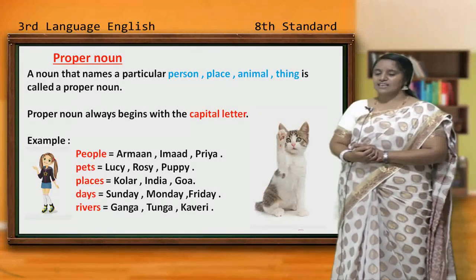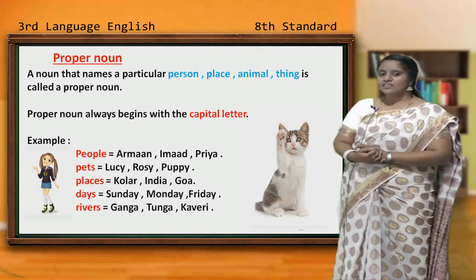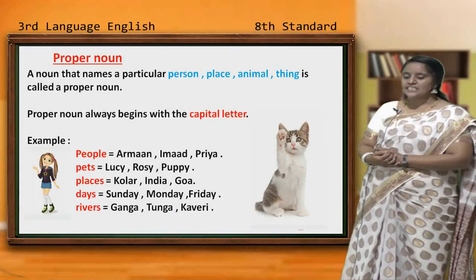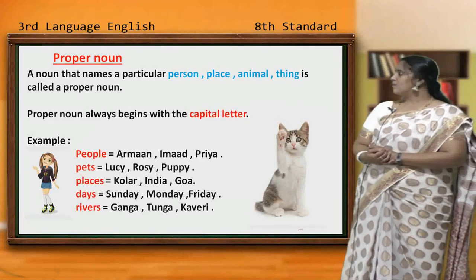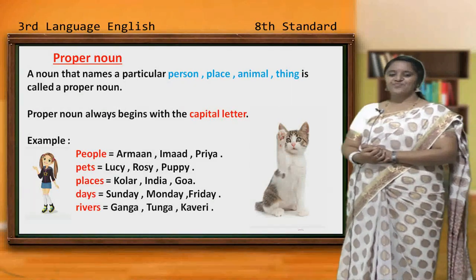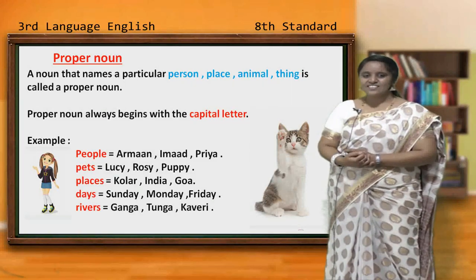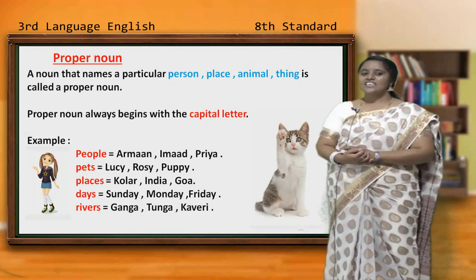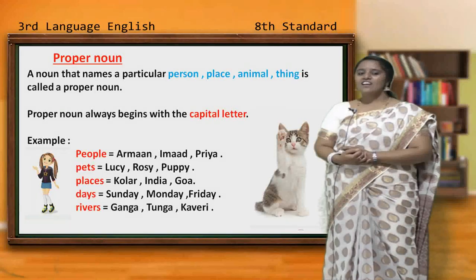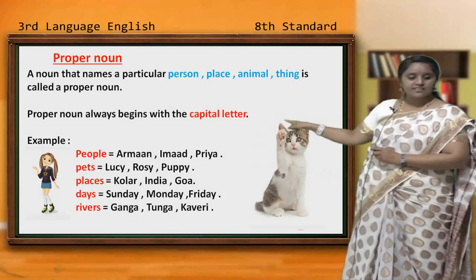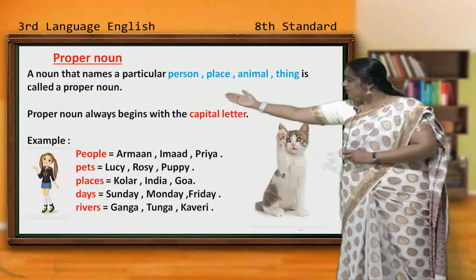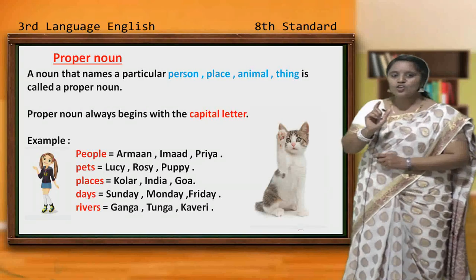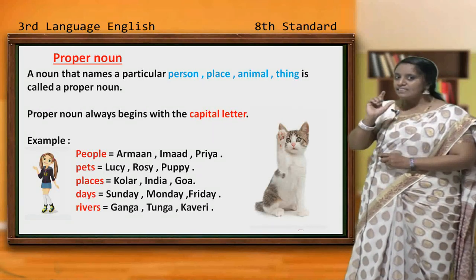Let us see examples. People: Arman, Himad, Priya. Pets: Lucy, Rosie, Puppy. Days: Sunday, Monday, Friday. Rivers: Ganga, Tunga, Kaveri. Observe all those words here — always proper nouns begin with a capital letter.